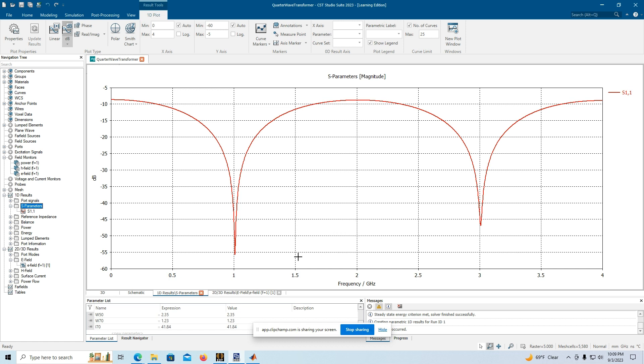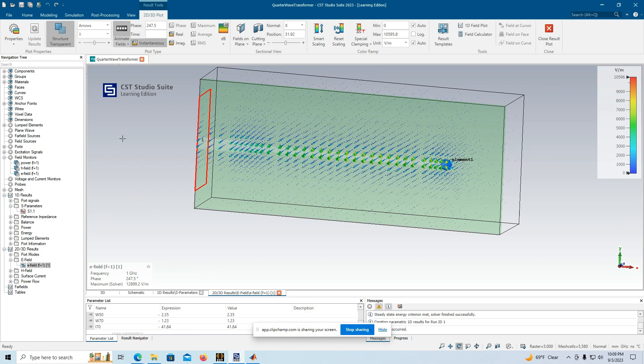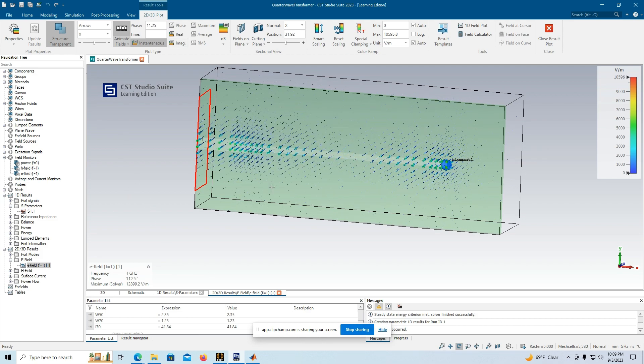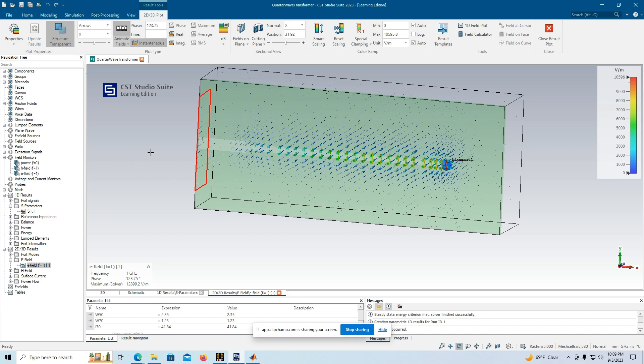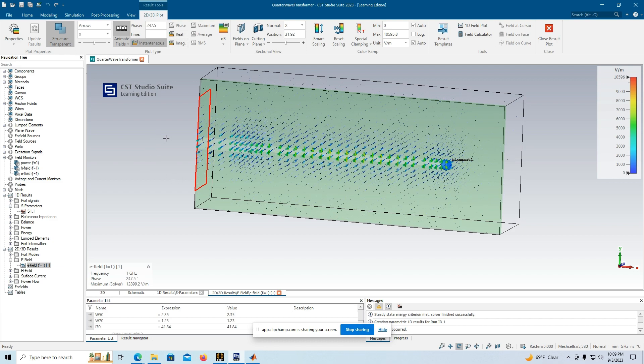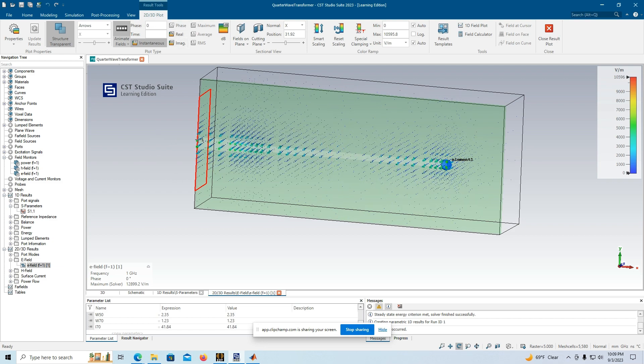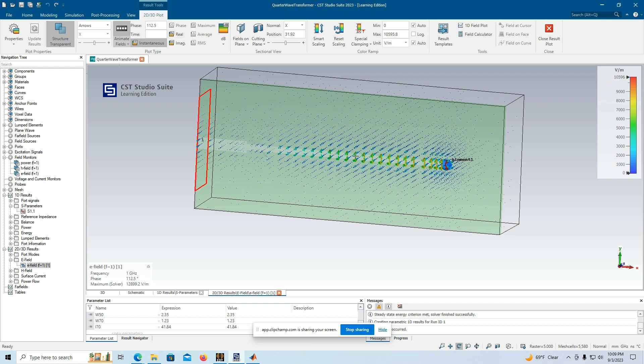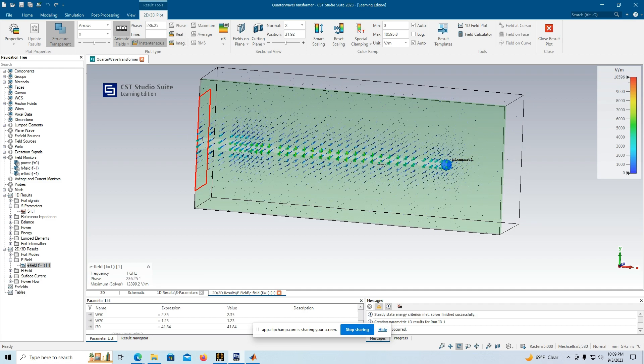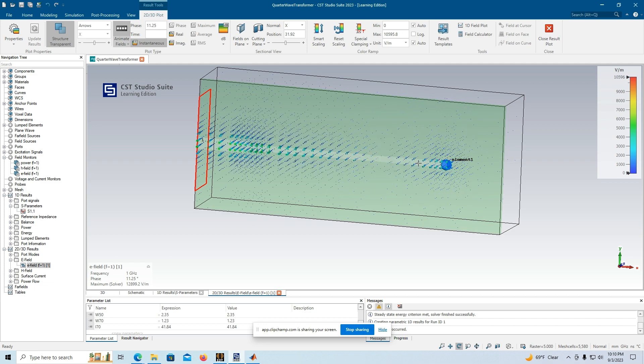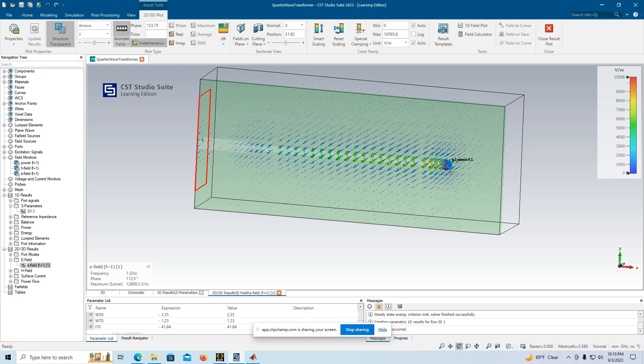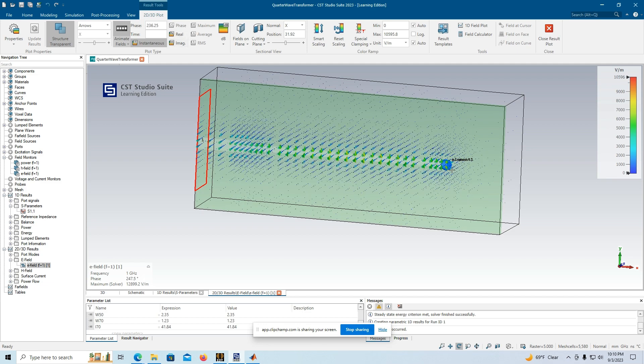Now, when you run this, you also get the eField results, and here is the animated eFields, and you can see the power beginning here at port 1 and propagating down the length of this quarter wave transformer and being absorbed by the 100 ohm load.